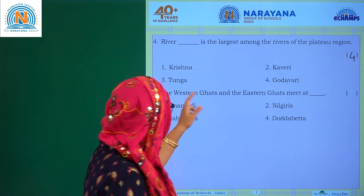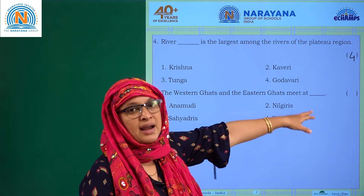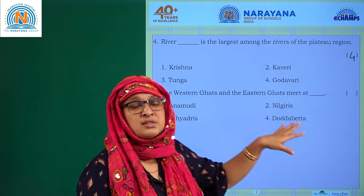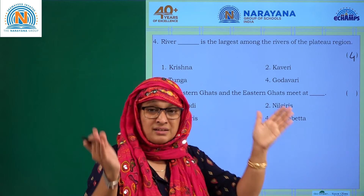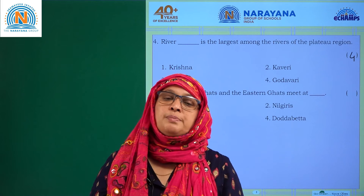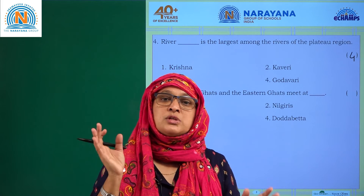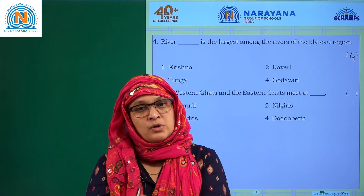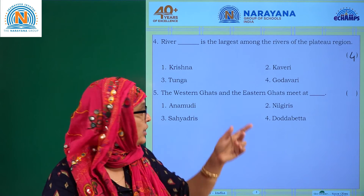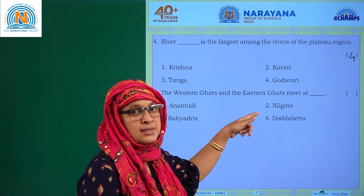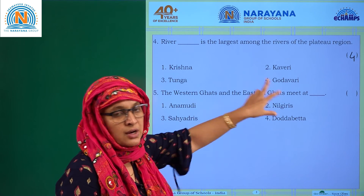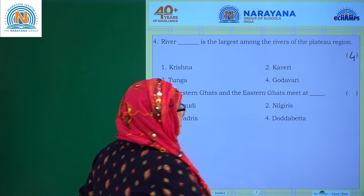The Western Ghats and the Eastern Ghats meet at dash. Western Ghats and Eastern Ghats meet at Nilgiris. Whereas Western Coastal Plains and Eastern Coastal Plains meet at Kanya Kumari or Cape Comorin. Here we are talking about the Ghats, so Annamudi, Nilgiris — two is the answer.